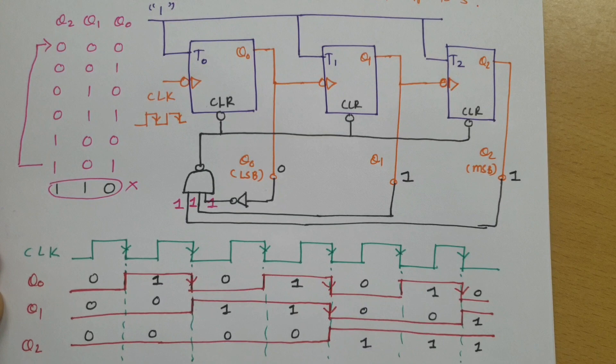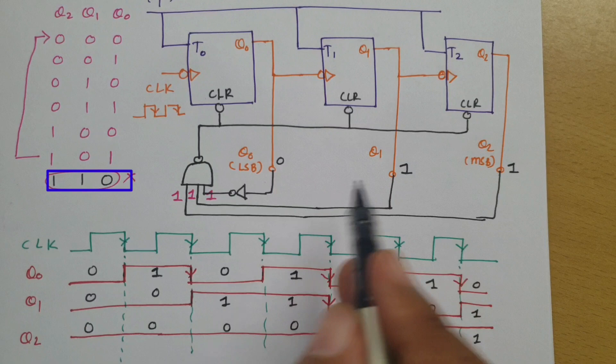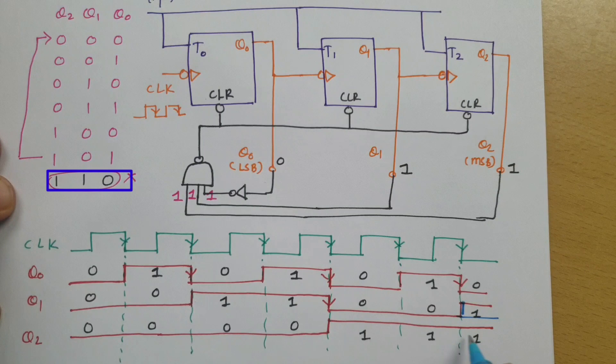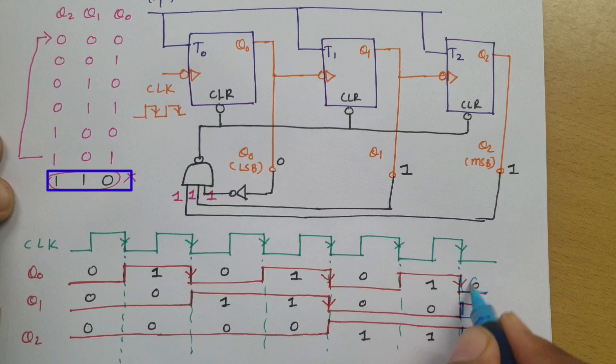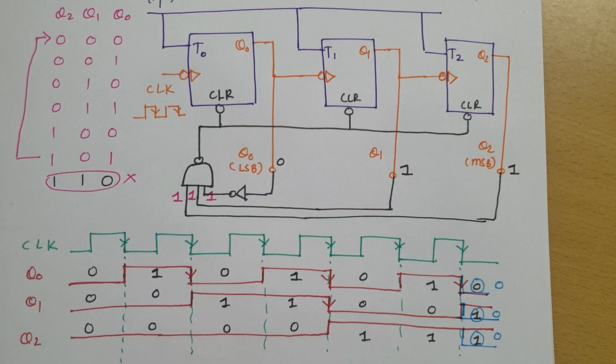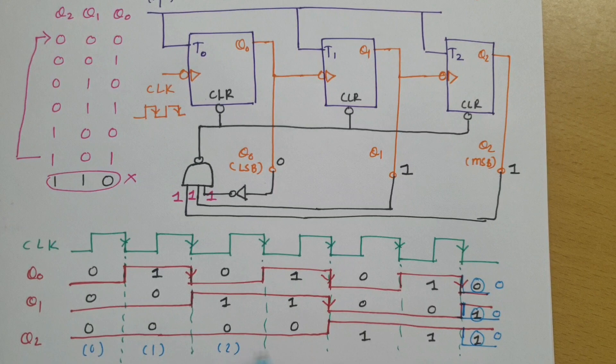When state 1-1-0 appears, the NAND gate clears all flip-flops immediately. Q1 and Q2 do not continue to 1; they are reset to 0. So the state 1-1-0 does not persist — the output jumps directly to 0-0-0, as driven by the NAND gate clear input.